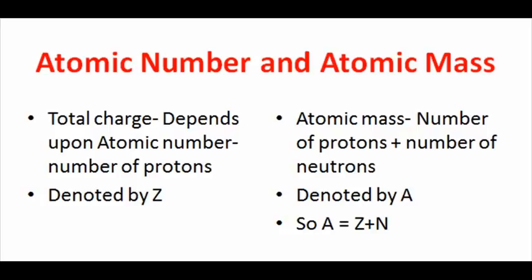The atomic number Z should not be confused with the mass number A, which is the number of nucleons, the total number of protons and neutrons in the nucleus of an atom.